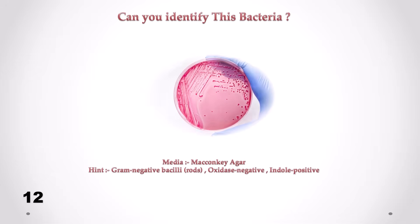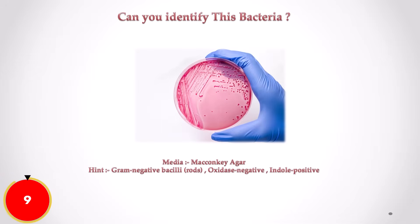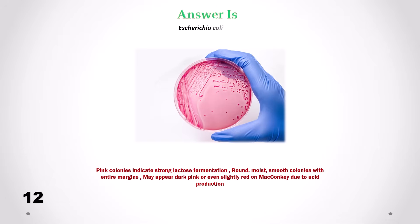Can you identify this bacteria? Correct answer is Escherichia coli. We can see pink colonies which indicate strong lactose fermentation. Colonies look round, moist, smooth with entire margins. May appear dark pink or even slightly red on MacConkey due to acid production.